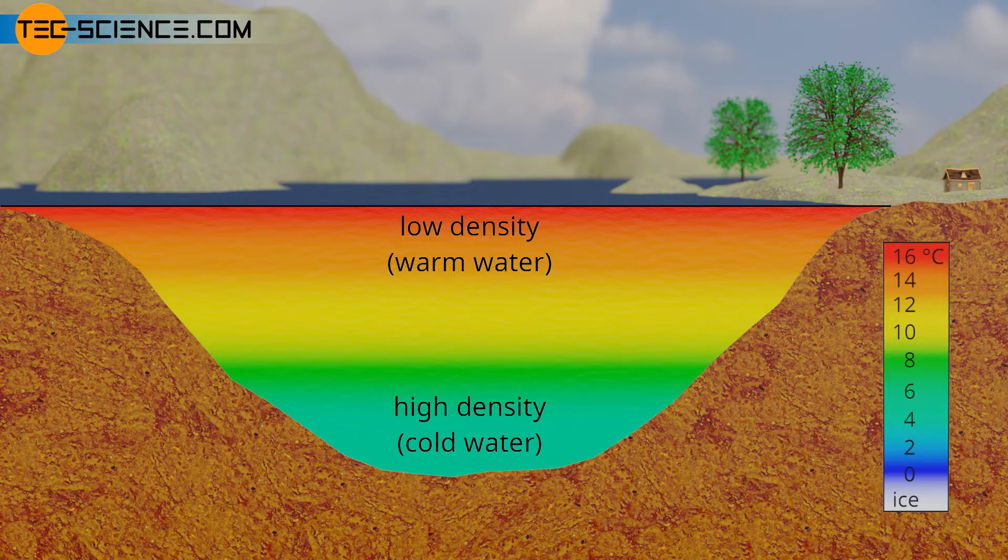Since water has the highest density at 4 degrees Celsius and is therefore the heaviest, it will sink to the bottom of the lake. In summer, the warmer water layers will settle above the 4 degrees Celsius cold ground layer due to the lower density. As a result of the decreasing density with increasing temperature, the water temperature will steadily increase towards the water surface.